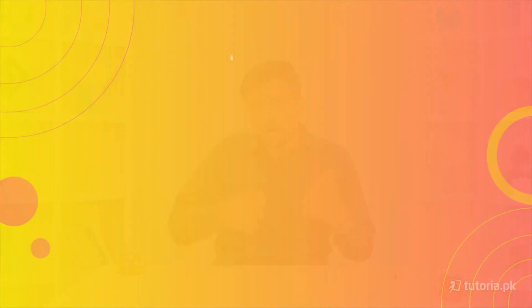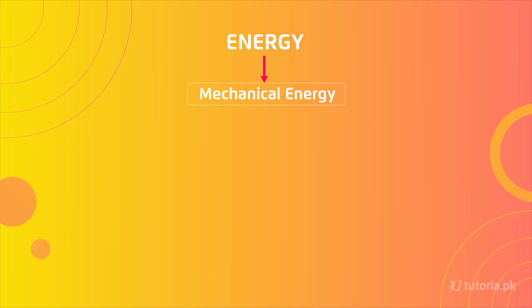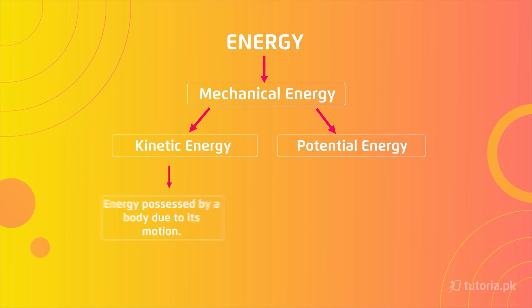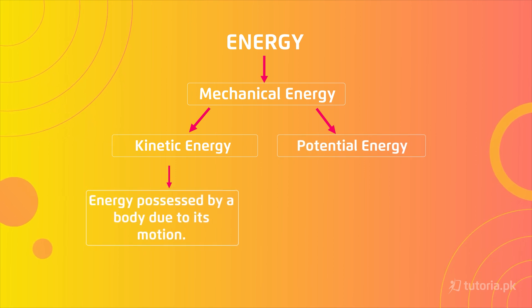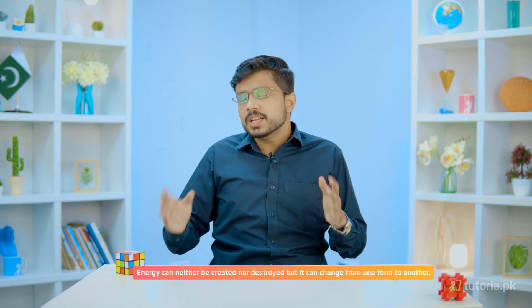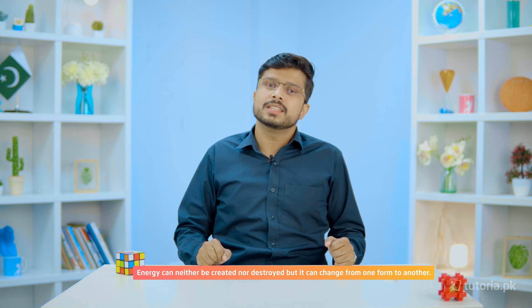Energy can be divided into many different types. A major type is mechanical energy, which has two types: kinetic energy and potential energy. Kinetic energy is defined as the energy possessed by a body due to its motion, whereas energy possessed by a body due to its position is called potential energy. Remember that energy can neither be created nor destroyed, but it can change from one form to another.